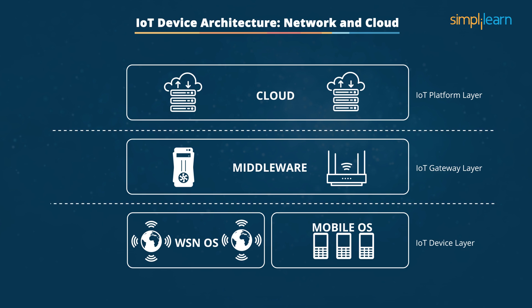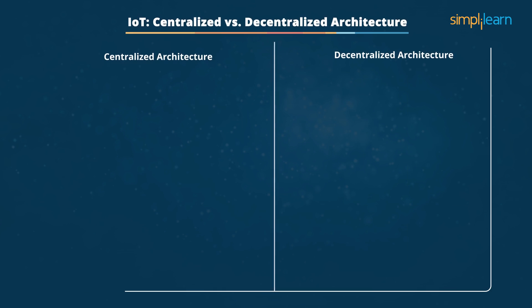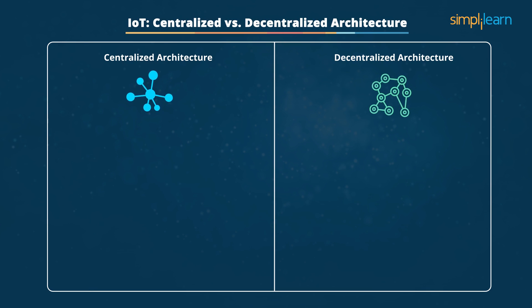These three layers interface with each other on the data synchronization front and provide a pathway to generate more data from various applications. The feasibility of the layers depends on their application. The centralized architecture is a hub and is managed from one point, whereas the decentralized one is based on the use case.